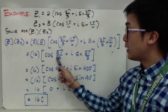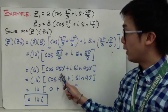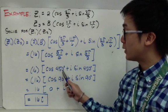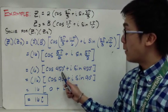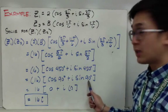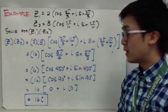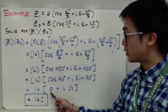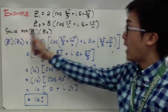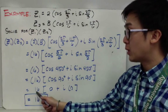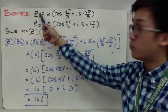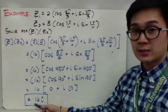Converting 5π/2 to degrees gives 450°. Since 450° is outside the unit circle range, we subtract 360° to get 90°. Cosine 90° = 0 and sine 90° = 1. Distributing 16 to both, we get 16 × 0 + 16i × 1. Therefore, the product of z₁ and z₂ is simply 16i.